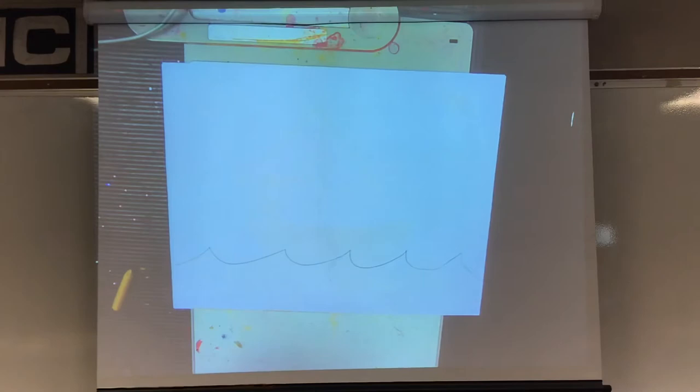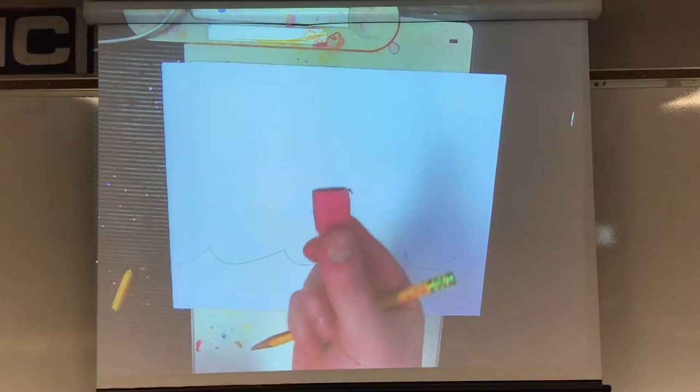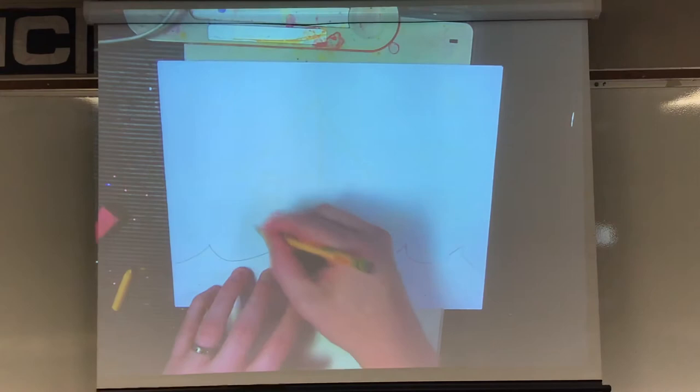So I'm going to draw the ocean first, I'm going to draw the waves first. Now, we're drawing with our pencils first, because if we make a mistake, we can erase it. Can you erase a crayon? No. So that's why we're going to draw with our pencil first.